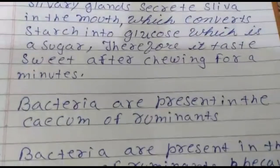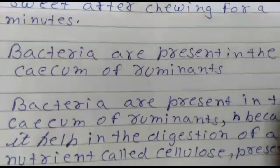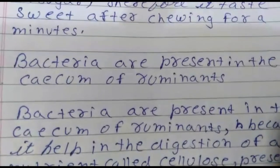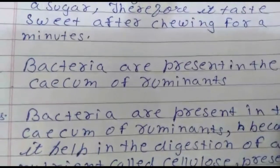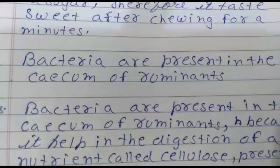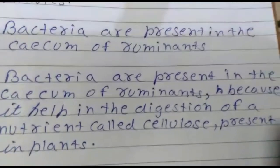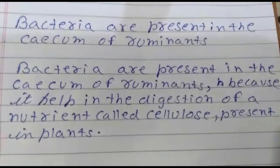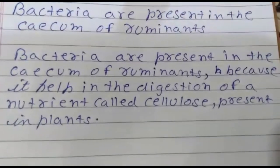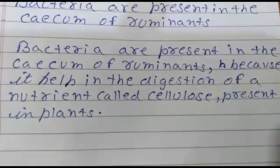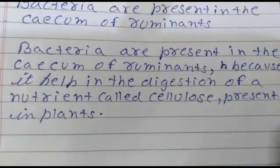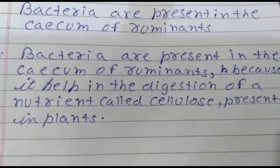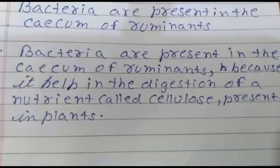Next: bacteria are present in the cecum of ruminants - why? Bacteria are present in the cecum of ruminants because they help in the digestion of the nutrient called cellulose present in plants. Ruminants consume plant material, so these bacteria assist in breaking down cellulose.